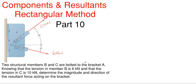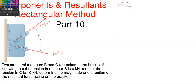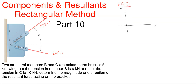What we're going to do first, since we are using the rectangular method, is solve this problem by starting out by drawing a free body diagram. Our free body diagram will consist of an x and y coordinate system, and our origin point will be the point at which both of these forces collide and act on — that little dot shown there.